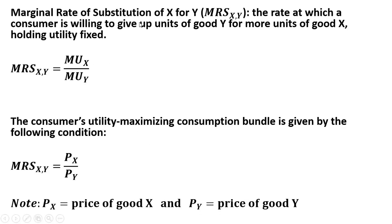The marginal rate of substitution of good x for good y is written as follows. It's the rate at which a consumer is willing to give up units of good y for more units of good x, holding utility fixed, moving along an indifference curve. We can write the marginal rate of substitution of good x for good y as the marginal utility of good x divided by the marginal utility of good y.